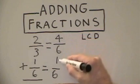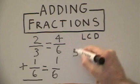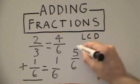Now, all we do is add our numerators, four and one, to get five over six, which is our final answer.